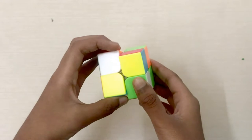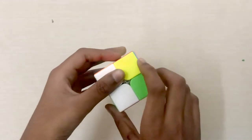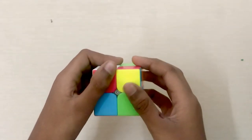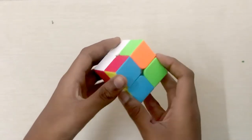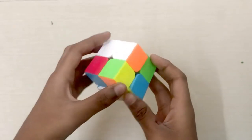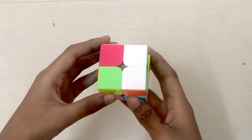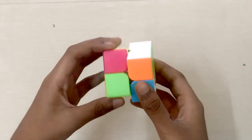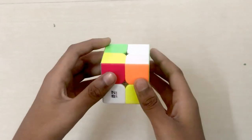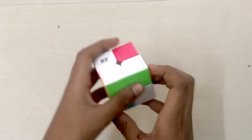First I look for a white piece, then I see the other two colors it has. Then I look for another white piece which has either one of the same colors as the first white piece. Similarly I will solve the first layer.